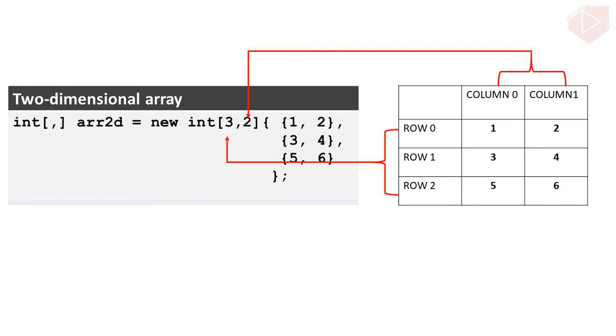Here is an illustration of a two-dimensional array divided into rows and columns. Now, how are we going to access the elements of a two-dimensional array?